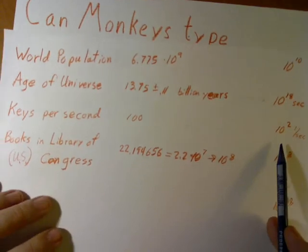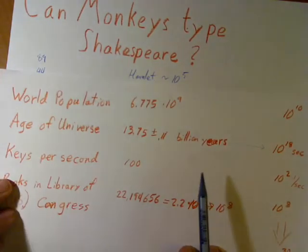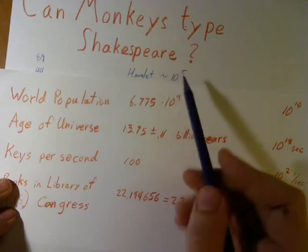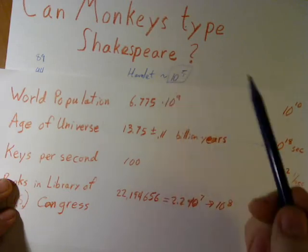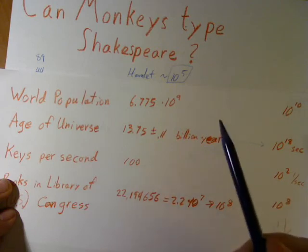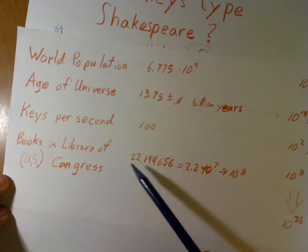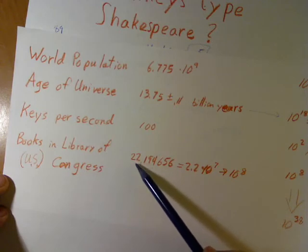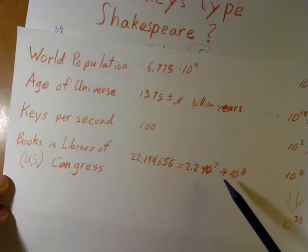Oh, and you know what? Let's not be picky. Why do we just have to get Hamlet? Let's get any book. We're going to assume it's still the same length, just to keep our calculations easy. But you know what? How many books are in the Library of Congress? We have some 22 million. Okay, let's round that up to 100 million. 10 to the eighth.